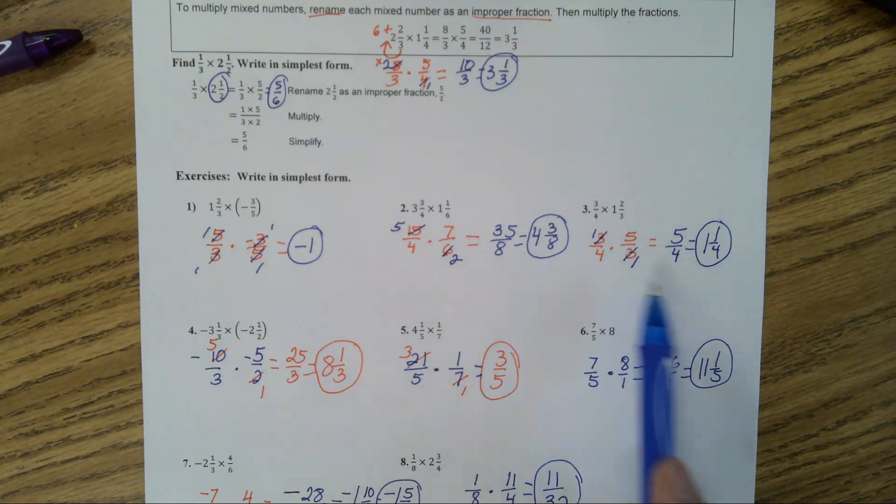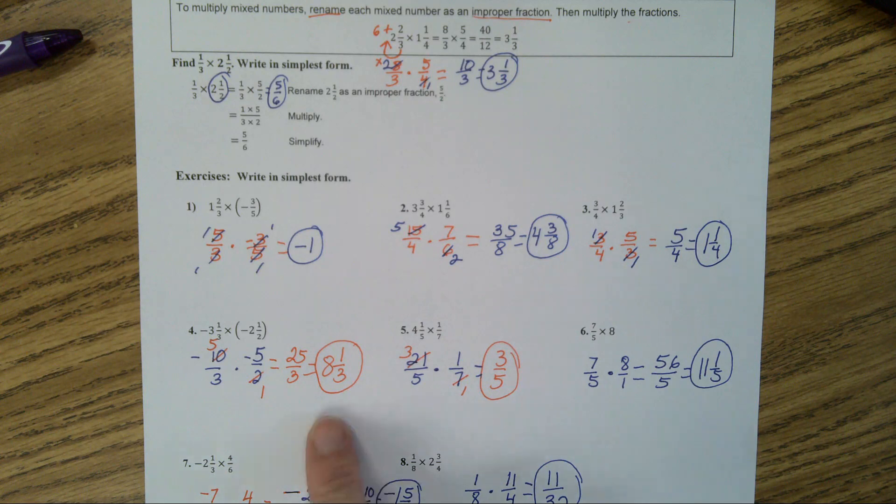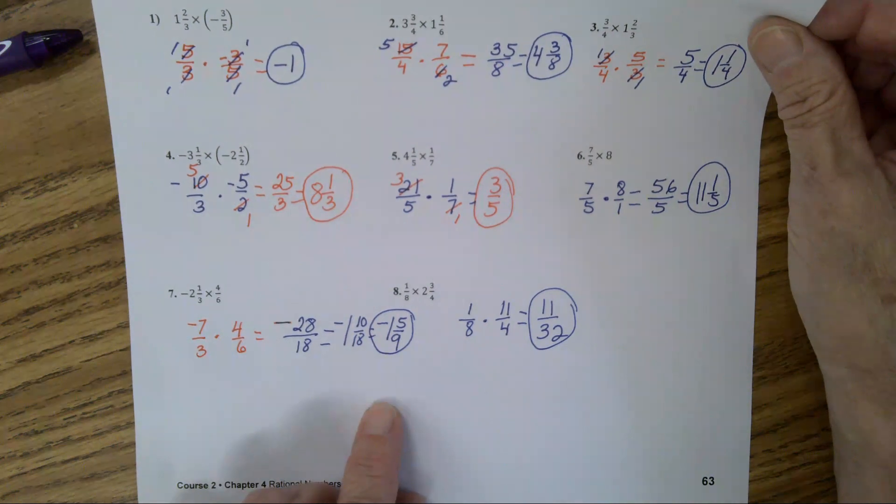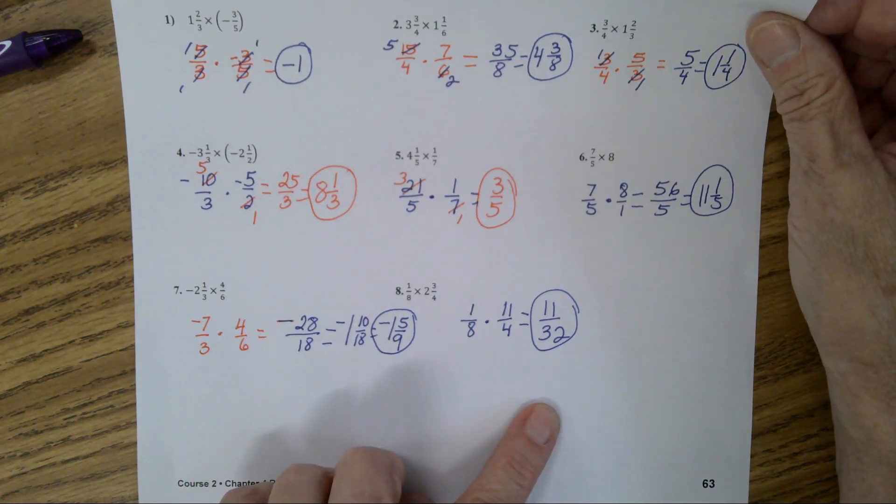Negative 1, 4 and 3 eighths, 1 and 1 fourth, 8 and 1 third, 3 fifths, 11 and 1 fifth. And the last two, negative 1 and 5 ninths, and 11 over 32.